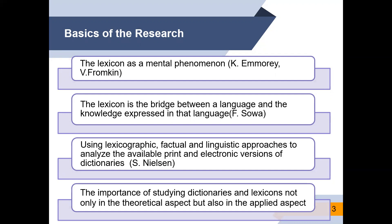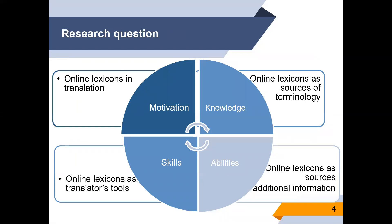Amor Frumkin considers the lexicon as a mental phenomenon and states that the mental lexicon is that component of the grammar that contains all the information — phonological, morphological, semantic, and syntactic. According to SOVA, the lexicon is a bridge between a language and the knowledge expressed in that language. Therefore, we consider such functions of online lexicons in the translation of specialized texts: online lexicons as sources of terminology, online lexicons as sources of additional information, and online lexicons as translators' tools.